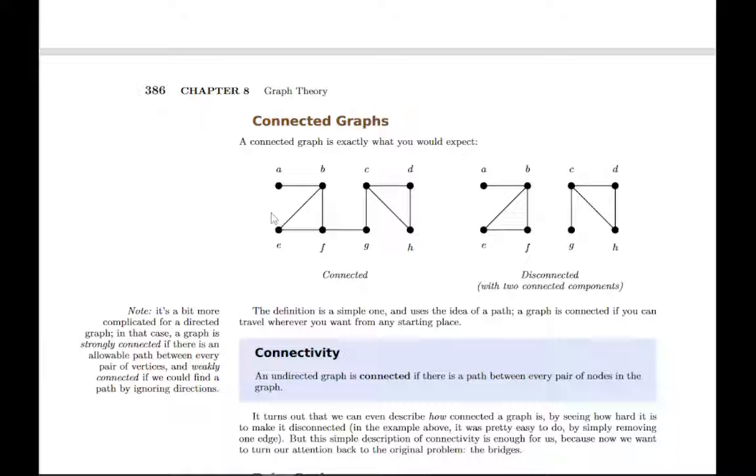So connectivity, when you observe the graph, it's pretty obvious when it's connected or not. But specifically, the definition is it's connected if you can find a path from any node to any other node.